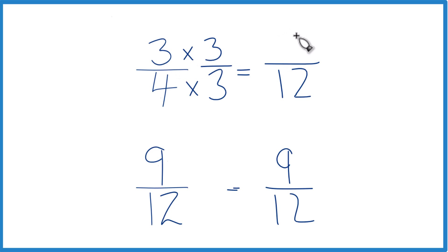3 times 3 is 9. And 9 twelfths, that's an equivalent fraction to 3 fourths, same value. Now we can compare these, and you'll see that they're the same.